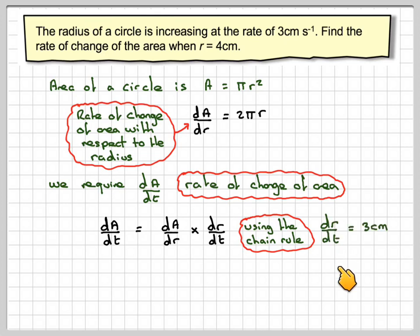Now, we know from the question that dr dt is equal to 3 centimetres per second from the question we've got that here. The radius is increasing, so it's the rate of change of the radius.